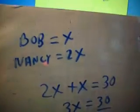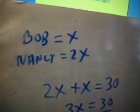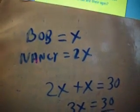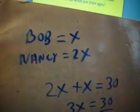Now Bob's age is unknown so we're going to replace his unknown age with the letter X. Now since Nancy is twice as old as Bob, we're going to multiply Bob's age by 2 and that will give Nancy's age.